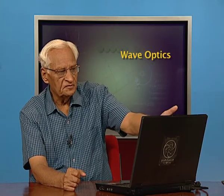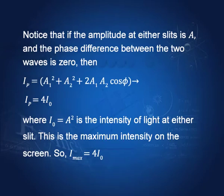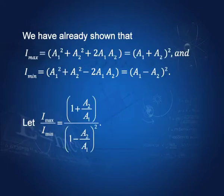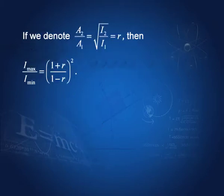If the amplitude at either slit is a, then Imax = 4I0 where I0 = a². More generally, Imax = (A1 + A2)² and Imin = (A1 − A2)². Defining r = A2/A1 = √(I2/I1), we can write Imax/Imin = ((1 + r)/(1 − r))².